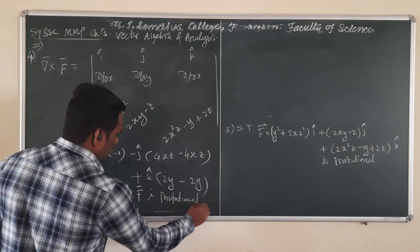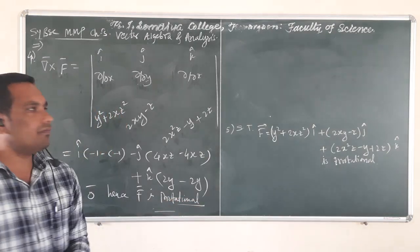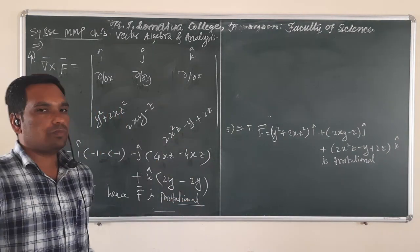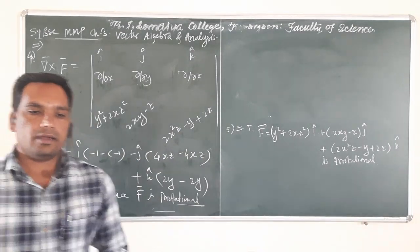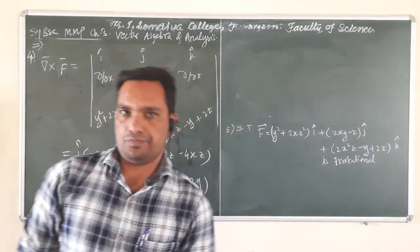Since curl of the given vector field is zero, hence vector F is irrotational. With this we finish this problem and also our lecture. Thank you.